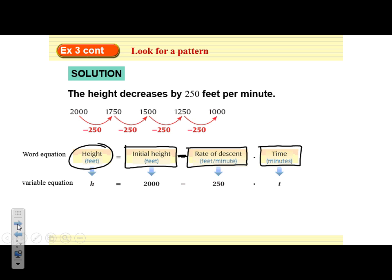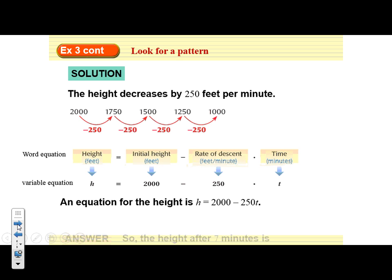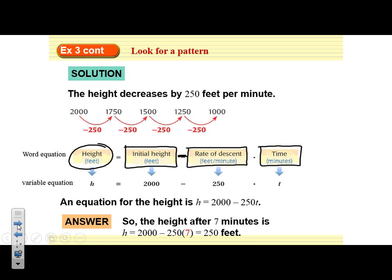So seeing what we have written there, we can now use that equation that we've created to predict a given value. So in this situation, they asked us for after 7 minutes. So we can just plug in the number 7 where the t is and calculate that. 2,400 subtract 250 times 7 leaves us with 250 feet remaining.